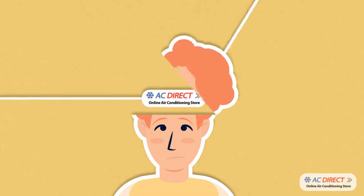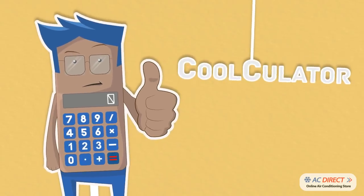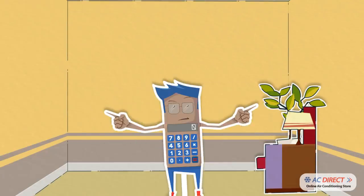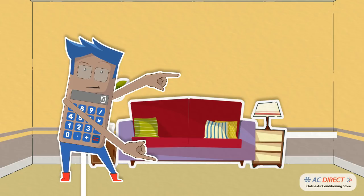Luckily, with AC Direct you can calculate the cooling capacity required for your space by using our revolutionary Coolculator. Simply enter the length of the room in meters, the width of the room in meters, the height of the room in meters.